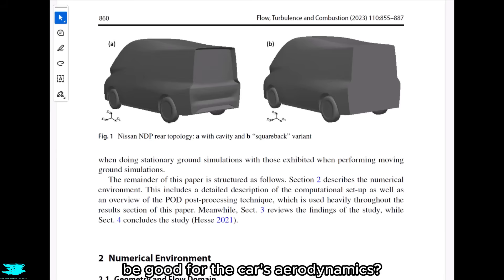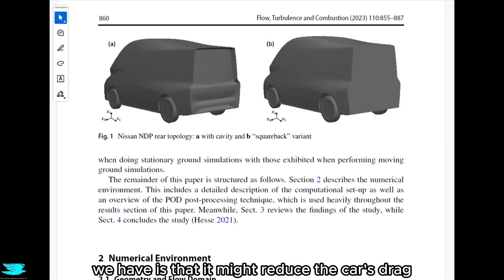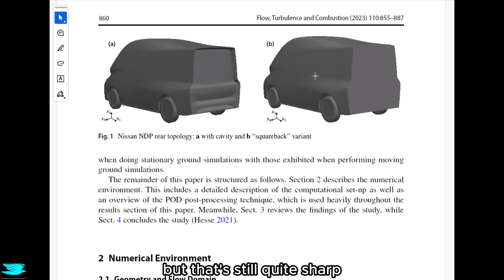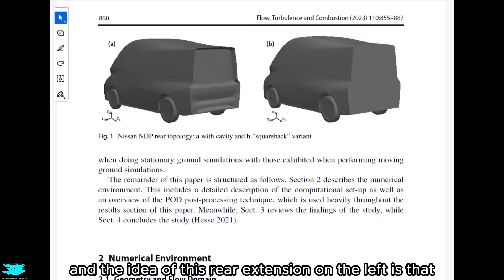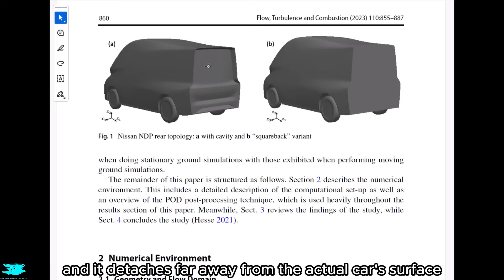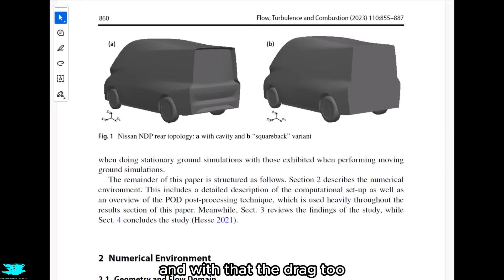Why would this extension be good for the car's aerodynamics? The idea is that it might reduce the car's drag. On the right, the car with the regular rear has no sharp edge — just a regular 90-degree edge — and the wake coming off it is very unsteady because the car is effectively a bluff body, causing the wake to flap around in the back. The rear extension on the left gives the flow a definite line to detach from, far away from the actual car's surface, which should reduce the unsteadiness of the wake and with that, the drag too.